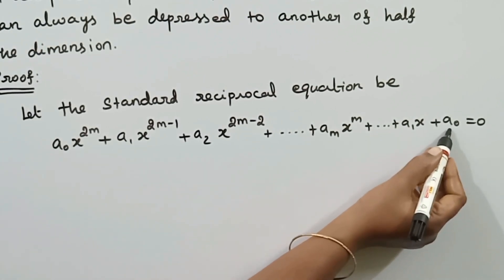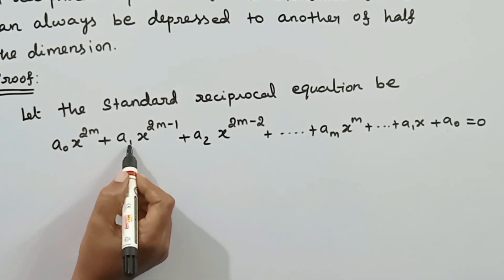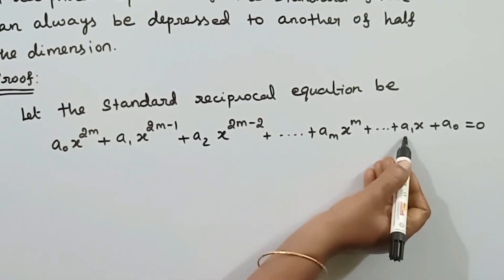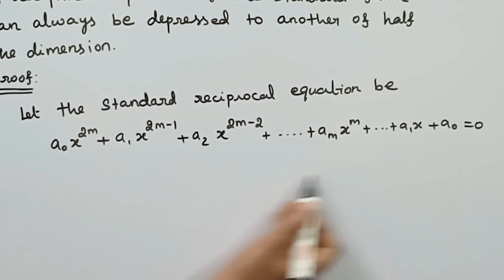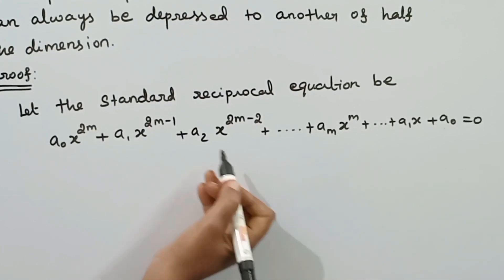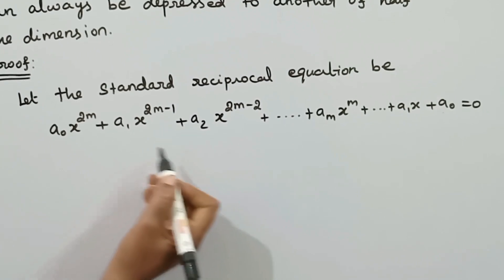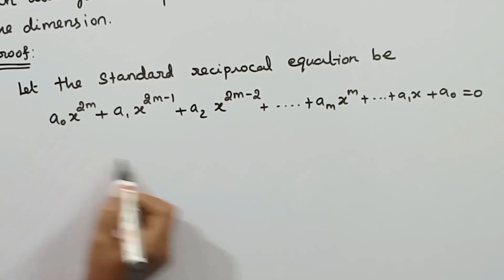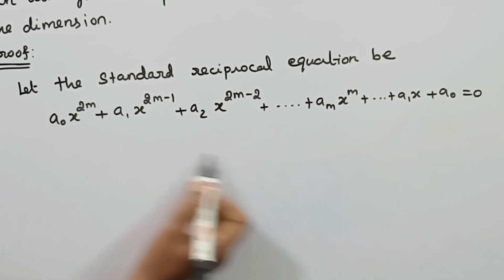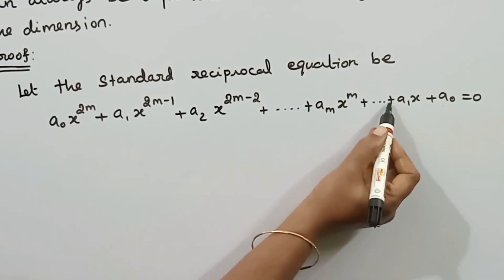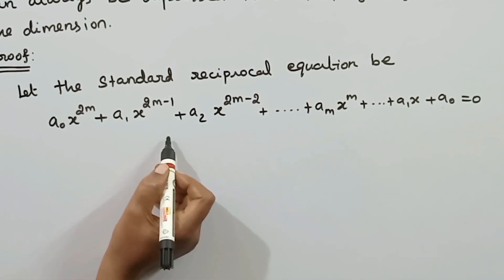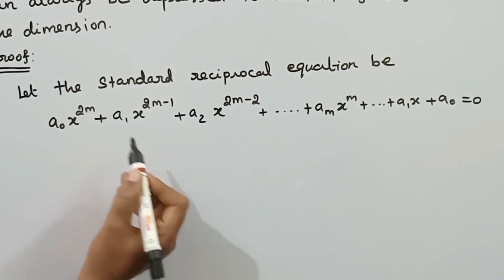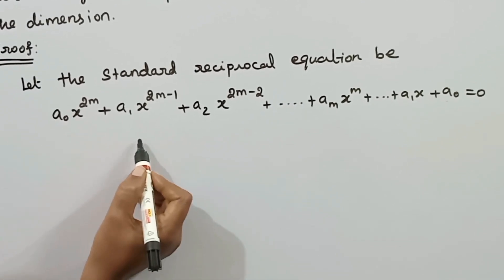The constant term is equal to the leading coefficient. The next coefficient is a1, and the second term's coefficient is also a1. The coefficients satisfy a reciprocal pattern. In the standard form, the signs are like signs — that is, even degree with like signs gives us a reciprocal equation. We find that the signs here are like signs, confirming this is the standard form of a reciprocal equation.